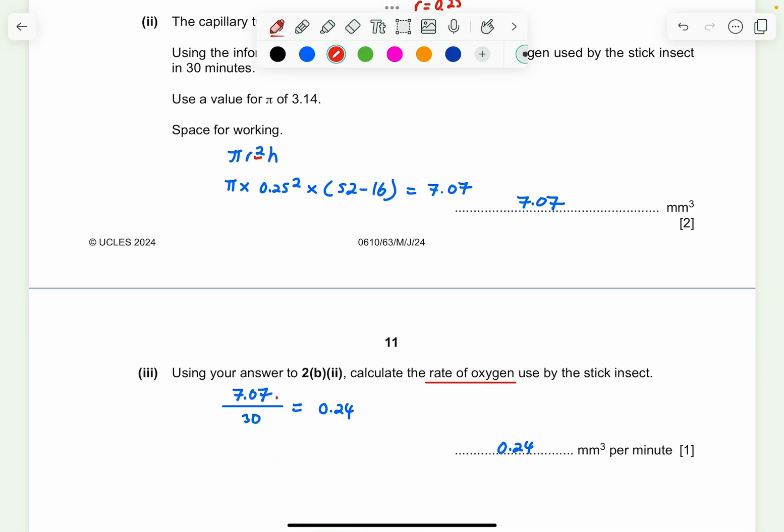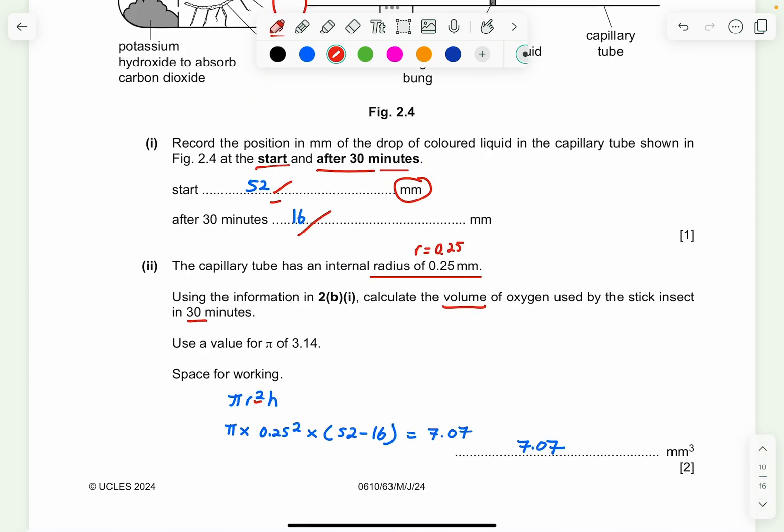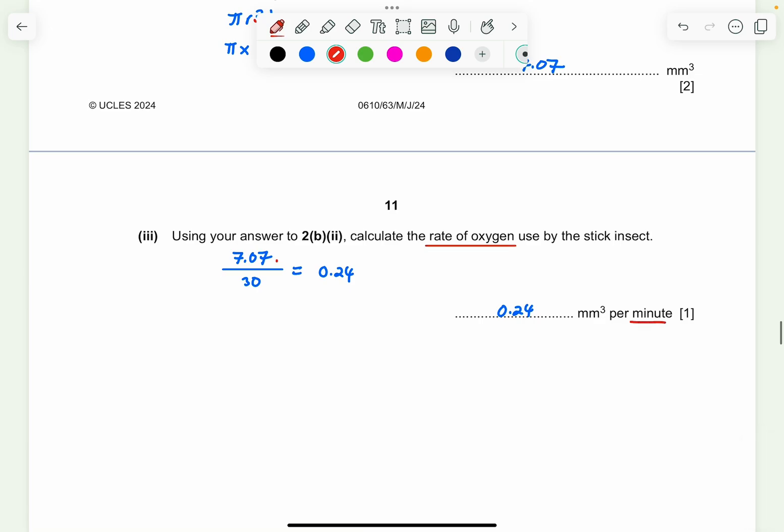And using your answer in 2b part 2, calculate the rate of oxygen. So you have found out the volume is 7.07. Now you want to divide by the time because the rate is always volume over time. So the time is given is 30 minutes. So you maintain here because the question, the answer they've given you is in per minute. So you don't have to change to second. You don't have to change to hours. So just take 7.07 divided by 30. You're going to get 0.24 millimeter cube per minute.